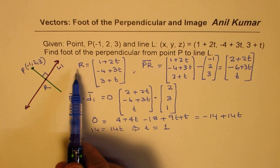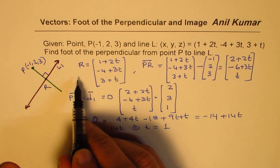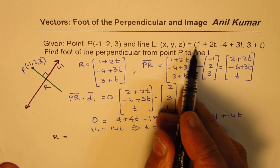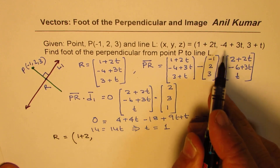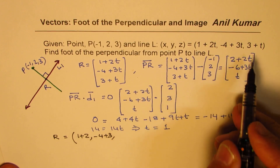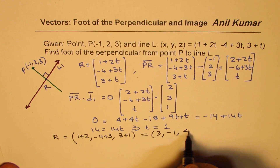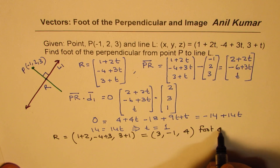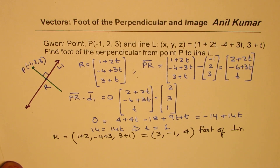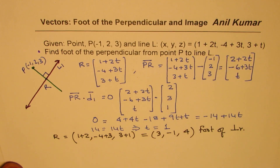Since t equals 1, we can find R — the foot of the perpendicular. Substituting into the line equation: R = (1+2, -4+3, 3+1) = (3, -1, 4). So the foot of the perpendicular from external point P to line L is the point R(3, -1, 4).